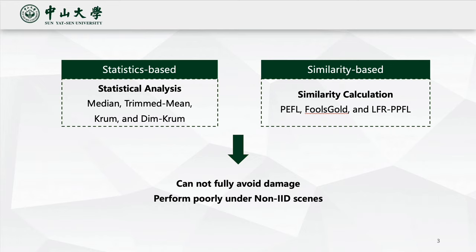Current defense methods against data poisoning can be categorized into statistics-based and similarity-based. However, most of the mechanisms cannot fully avoid damage and perform poorly under non-IID scenes.